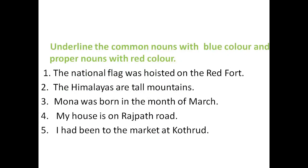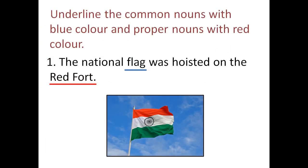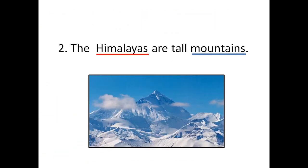Now, let us underline the Common Nouns with blue color and Proper Nouns with red color. 'The National Flag was hoisted on the Red Fort.' Flag is the general name of a thing, so flag is a common noun. Red Fort is the special name of the fort, so Red Fort is a proper noun. 'The Himalayas are tall mountains.' Himalayas is a special name, so it is a proper noun. Mountains is a general name, so it is a common noun.